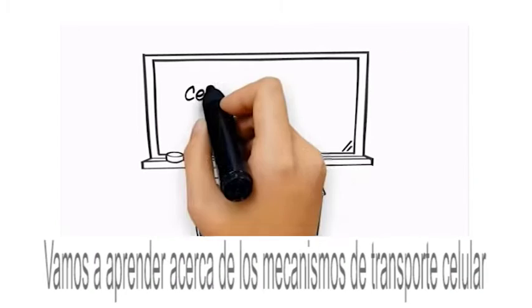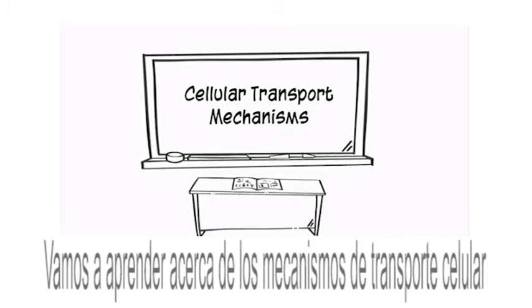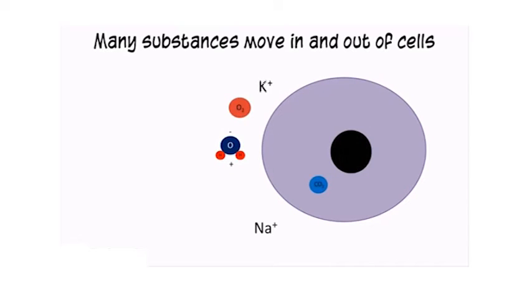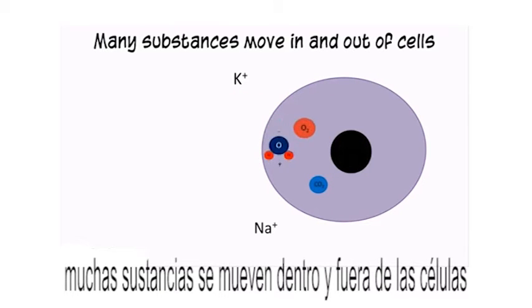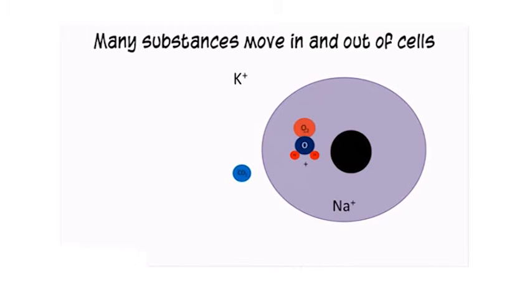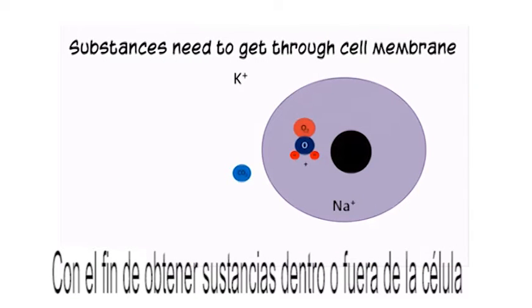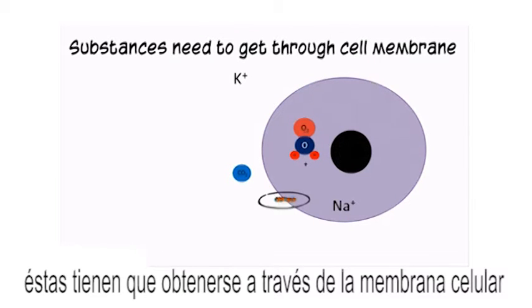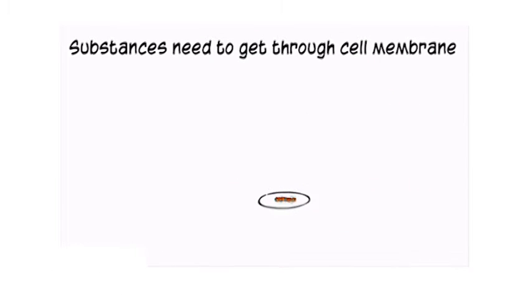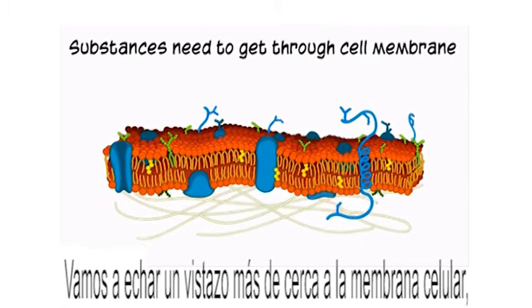Let's learn about cellular transport mechanisms. Many substances move in and out of cells. In order to get substances into or out of the cell, they must get through the cell membrane. Let's take a closer look at the cell membrane.